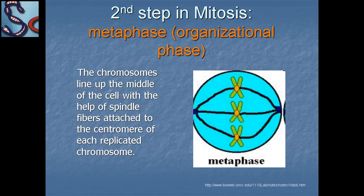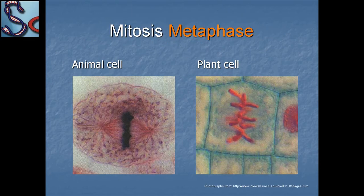The second step is metaphase, the organizational phase. The chromosomes line up on the spindles of the cell, with the help of spindle fibers attached to the centromere of each replicated chromosome. In plant cells they are arranged one way, and in animal cells they line up in a straight line in the center.